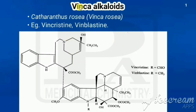We have already seen six classes of anti-neoplastic agents. In this class we are going to see plant products, hormones, and drugs. The first one is vinca alkaloids, isolated from Catharanthus rosea, otherwise called Vinca rosea.